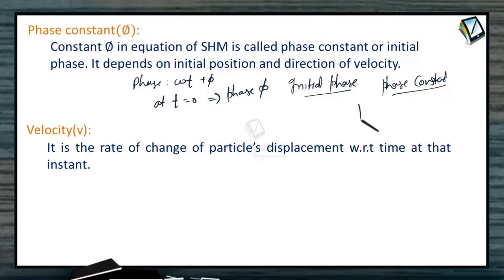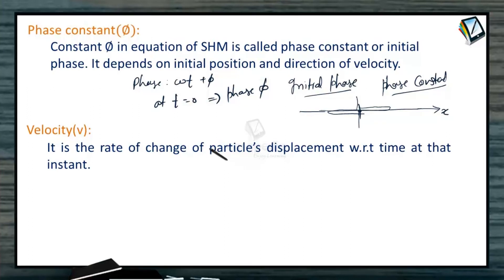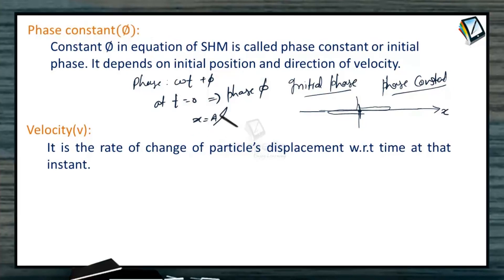Suppose a particle is already oscillating about a mean position with some amplitude, and you want to represent it with the equation x as a sinusoidal function. You need to declare t equal to 0 at some instant. At that instant the particle may be at the mean position or somewhere else — this initial status of the particle is taken care of by the phase constant phi.